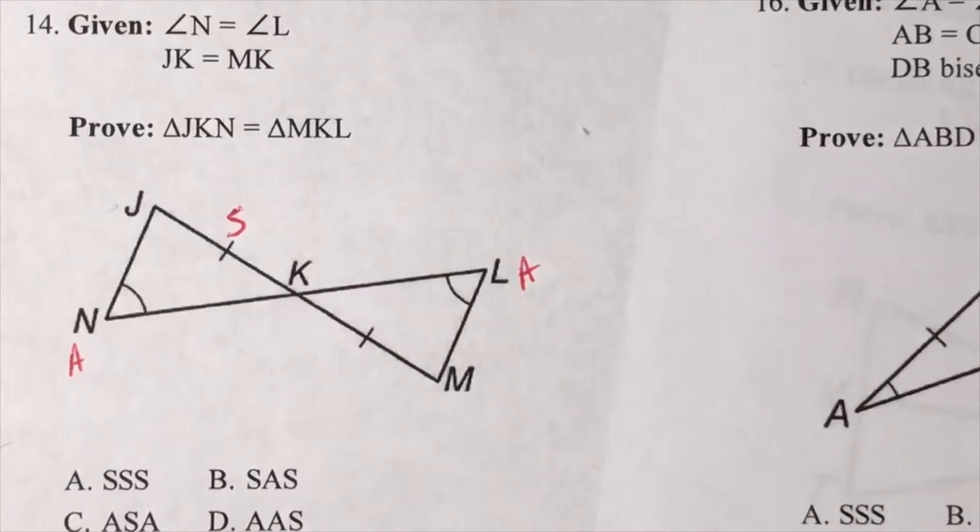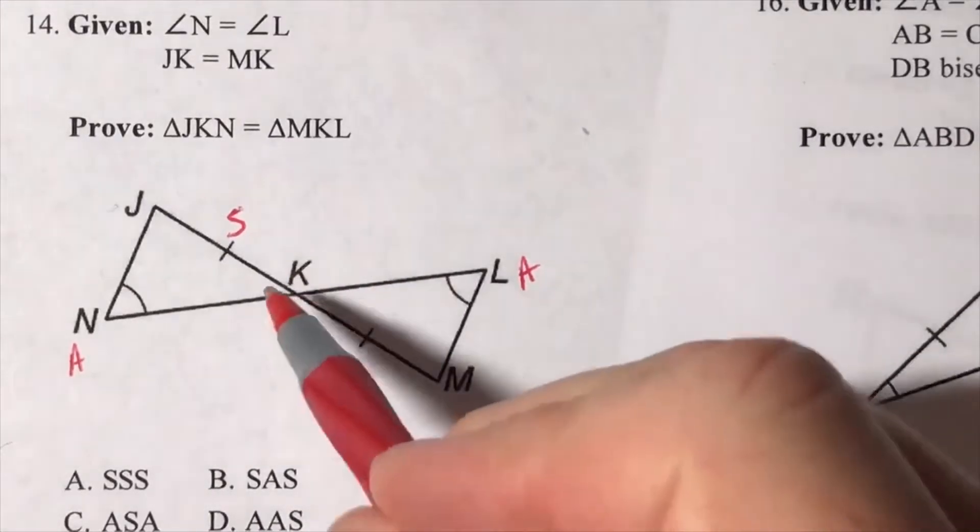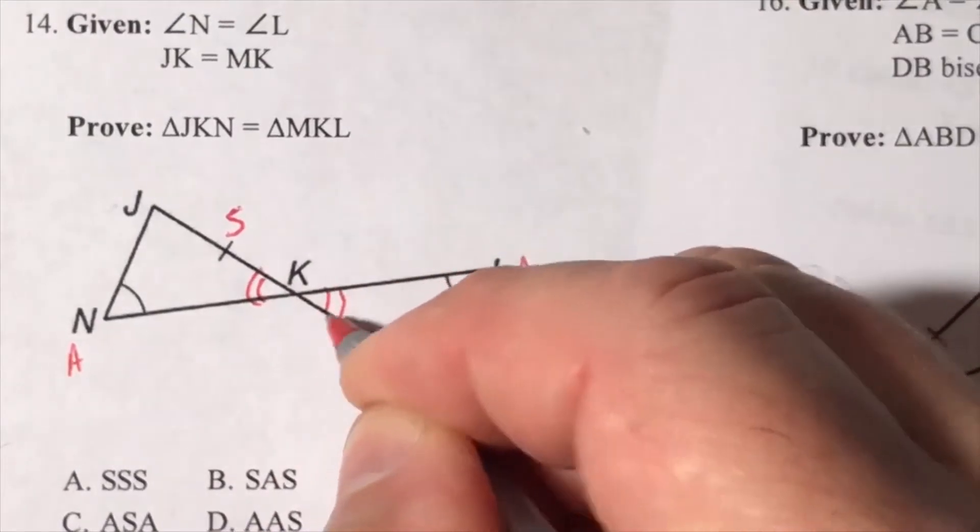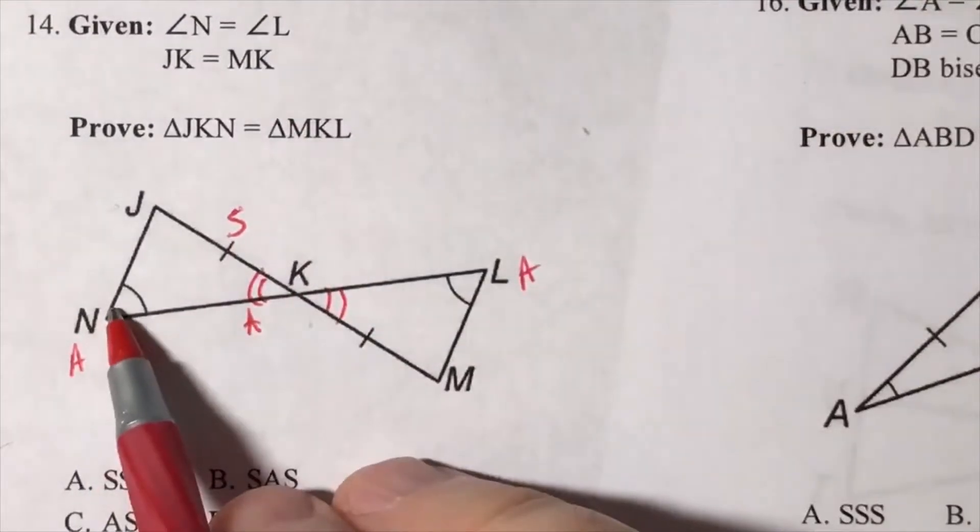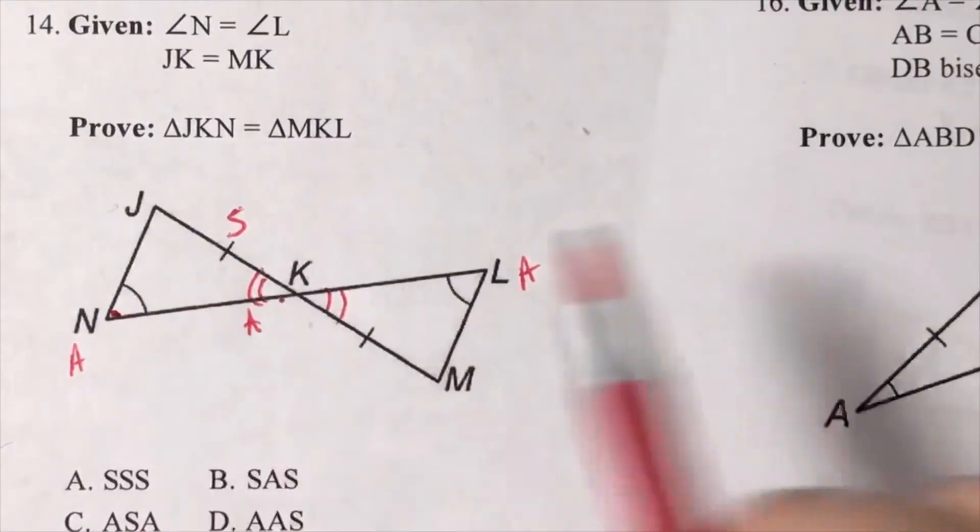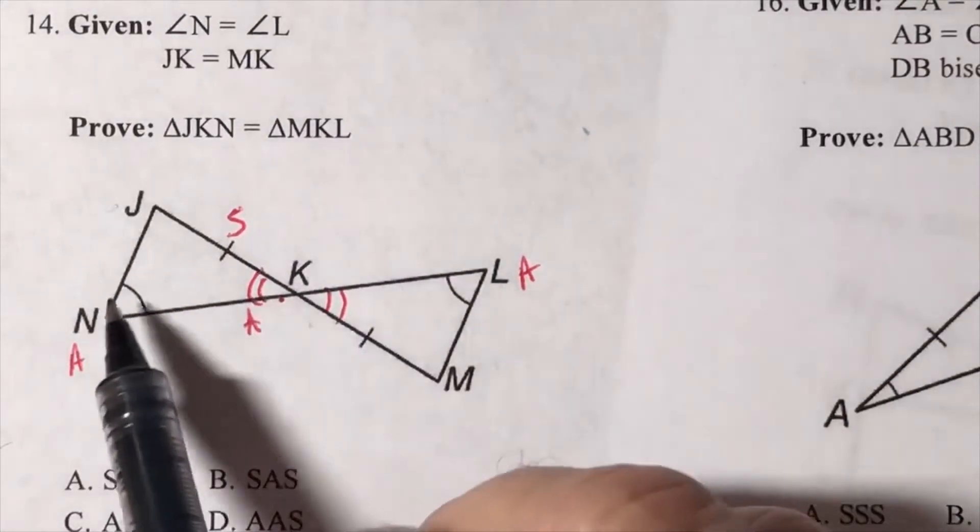These are vertical. So let's put two arcs here and here. That gets us another A, so we would get angle, angle, side.